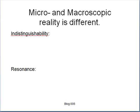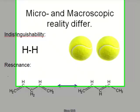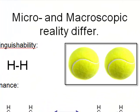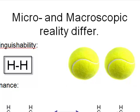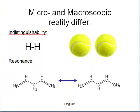Reality is different between the microscopic and the macroscopic levels because of indistinguishability and resonance. These properties do not exist classically. You can always find differences between any two macroscopic objects, but you cannot tell one hydrogen atom from another, nor one electron from the other. They are indistinguishable.